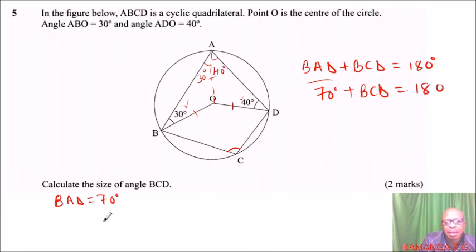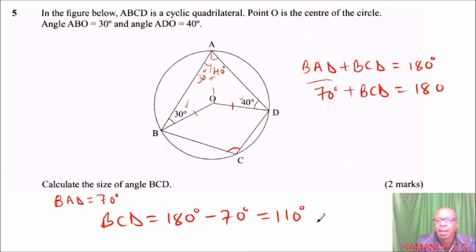This means we get our BCD equals 180 degrees minus 70 degrees, and that should give you 110 degrees. So this angle here is 110 degrees, and that is how you work out that question. You'll be able to get yourself two marks.